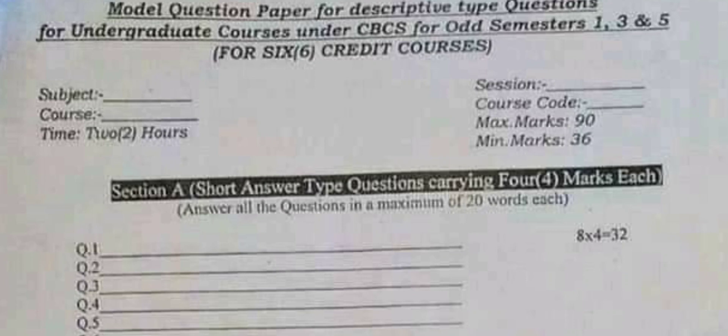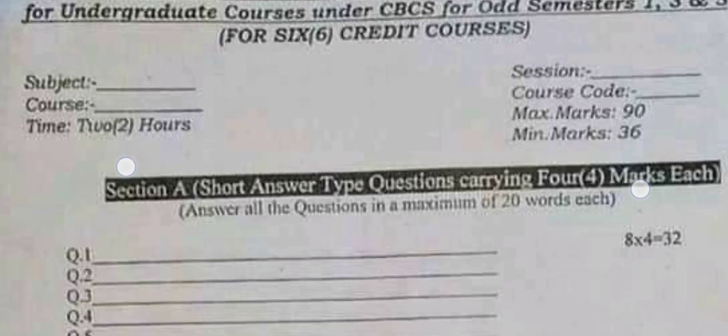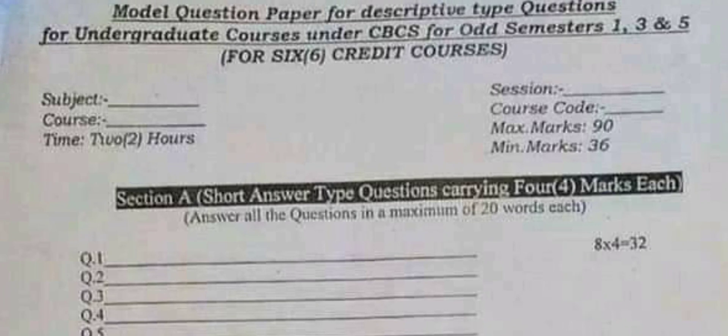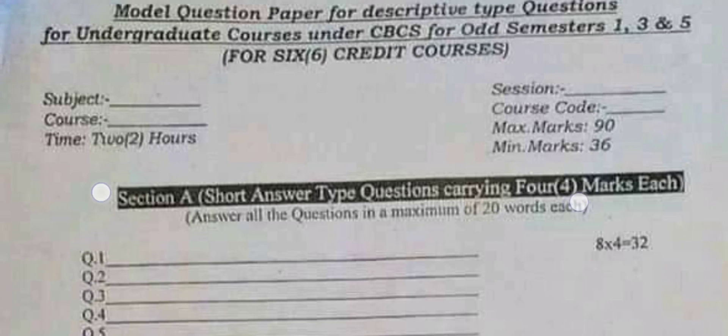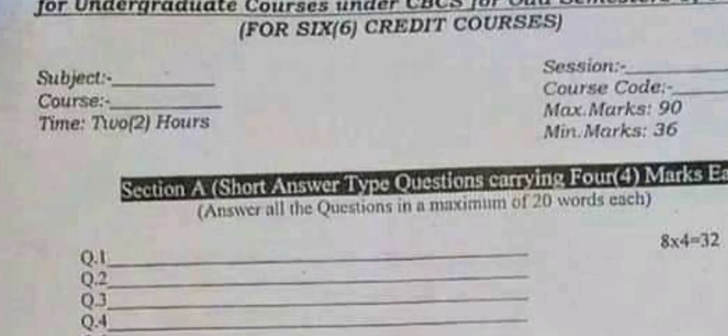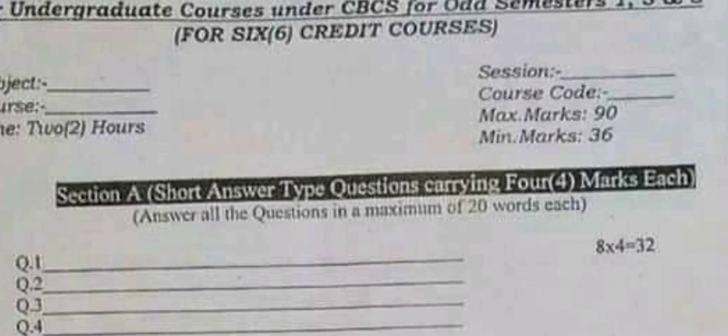First of all you have to write the subject, then the course — which course you have. And time: you have a time of two hours. Maximum marks are 90. And minimum marks, meaning the pass marks, you have to write 36.